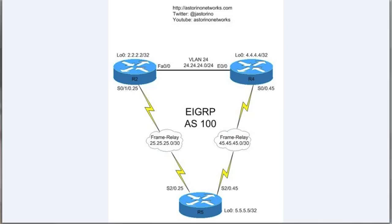Sometimes we don't want that to happen — it might not be very efficient, especially where router 5 is sort of the end of the line. That's really what a stub router means: it means 'I'm at the end of the line, there's no routers behind me.' There's really no point in those routers asking router 5 if it has the missing route, because if it didn't advertise it up, it doesn't have it.